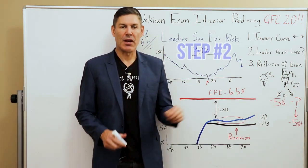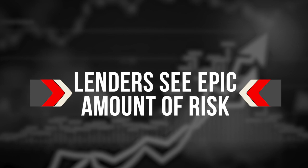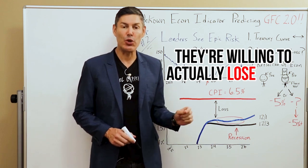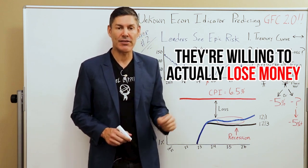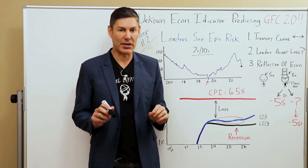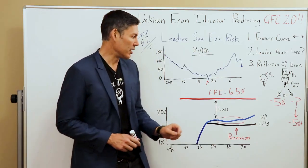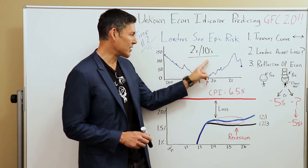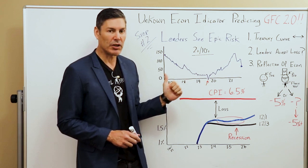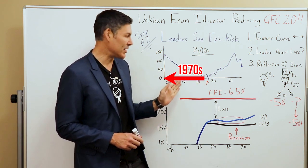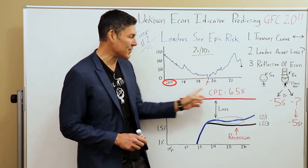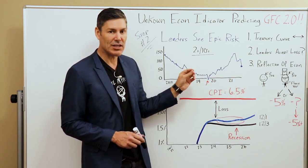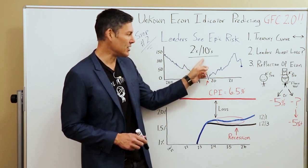Step number two: lenders see an epic amount of risk — so much so they're willing to actually lose money as long as the losses are defined. Let's look at a more detailed chart of the twos and the tens. In step number one, we looked at this going all the way back to the 1970s. Here I want to focus on 2017 to today's date. This is the delta — the difference in yield between the two-year and the ten-year.